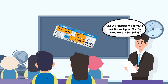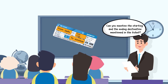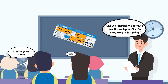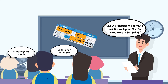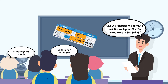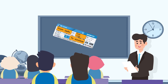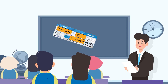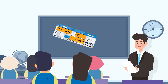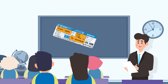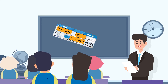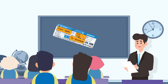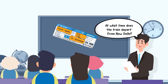Ask the students: can you mention the starting and ending destination mentioned in the ticket? Students will respond according to their respective tickets. For instance, if they have a ticket for Amritsar from New Delhi, they will identify that the starting point is New Delhi and the ending destination is Amritsar. Upon getting the responses, ask the students at what time does the train depart from New Delhi.